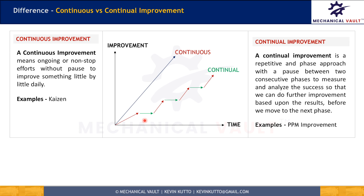The continuous approach could be a go-go-go approach without any pause in between, whereas the continual approach could be a start-stop-start-stop approach where there are pauses in between to measure and analyze the results. Most quality management system standards like ISO 9001-2000 or IATF 16949 vouch for continual improvement, and it really makes sense to take a pause, learn, and improve after every phase.